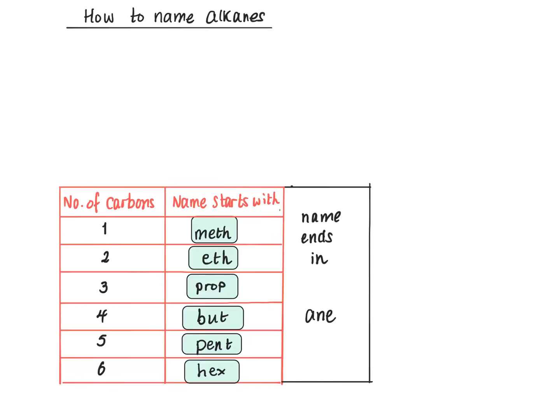To work out the name of an alkane, you look at the number of carbons there are. If it contains one carbon it starts with meth.